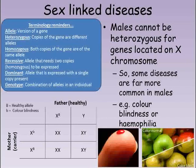We can use a Punnett square to show the possible offspring that these parents can produce. Of course, there's a 50% chance of producing a male and 50% chance of producing a female baby. If they produce a female, then there's no chance they'll have colour blindness, as they must inherit the healthy allele from the father. If they have a son, there's a 50% chance of him having colour blindness, depending on which allele he inherits on the X chromosome from his mother.